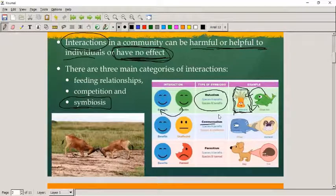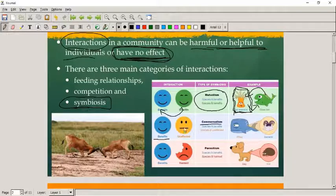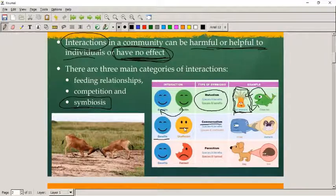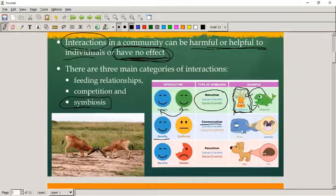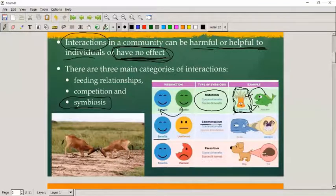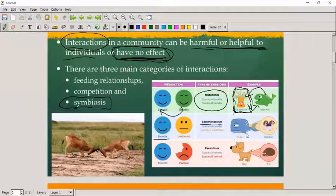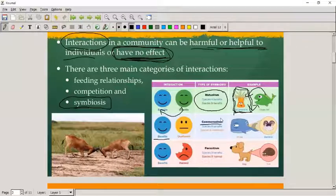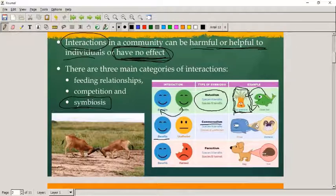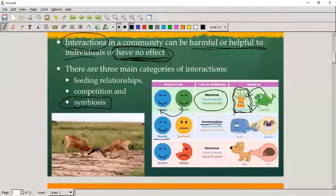Then we get commensalism. In commensalism, one species benefits but the other is not affected. A typical example is barnacles living on top of whales - no effect on the whale, but the barnacle gets a place to stay and protection. A bird nesting in a tree is also commensalism.